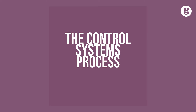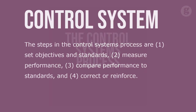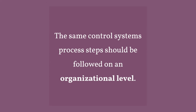Let's take a look at the control systems process. The steps in the control system process are: set objectives and standards, measure performance, compare performance to standards, and correct and reinforce. The same control systems process steps should be followed on an organizational level.